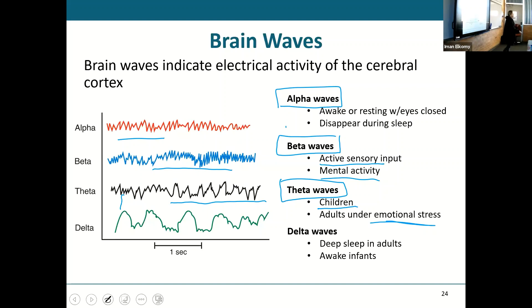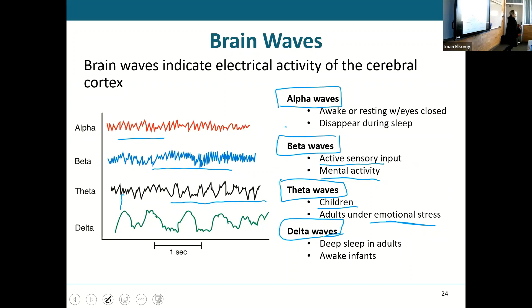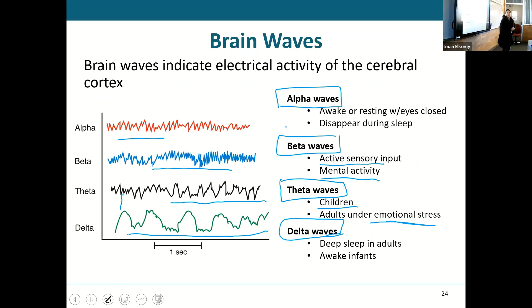Infants are even lower — in infants we're going to see delta waves. That would be a child under two years, born a couple of months ago, six months old. Their brain waves are spaced more apart, less frequent, and much larger. Those are delta waves, and you will see those in infants normally and in deep sleep in adults.